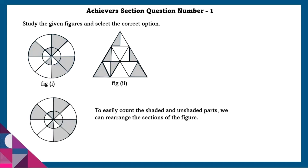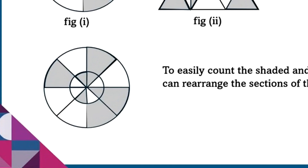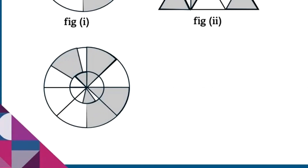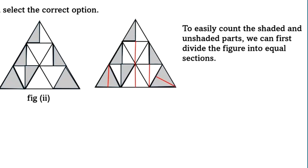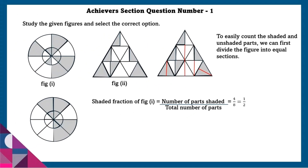To easily count the shaded and unshaded parts, we can rearrange the sections of the given figure. We can first divide the figure into equal sections. Shaded fraction of figure 1 is equal to number of parts shaded by the total number of parts, which is equal to 4 by 8, reduced to 1 by 2.